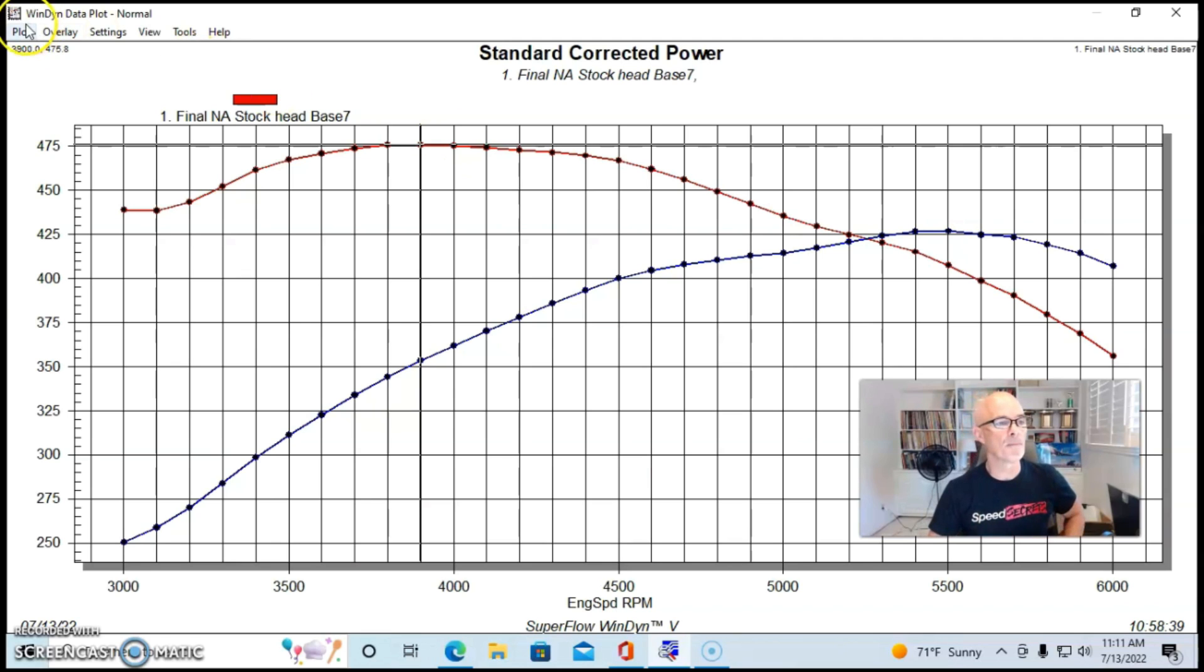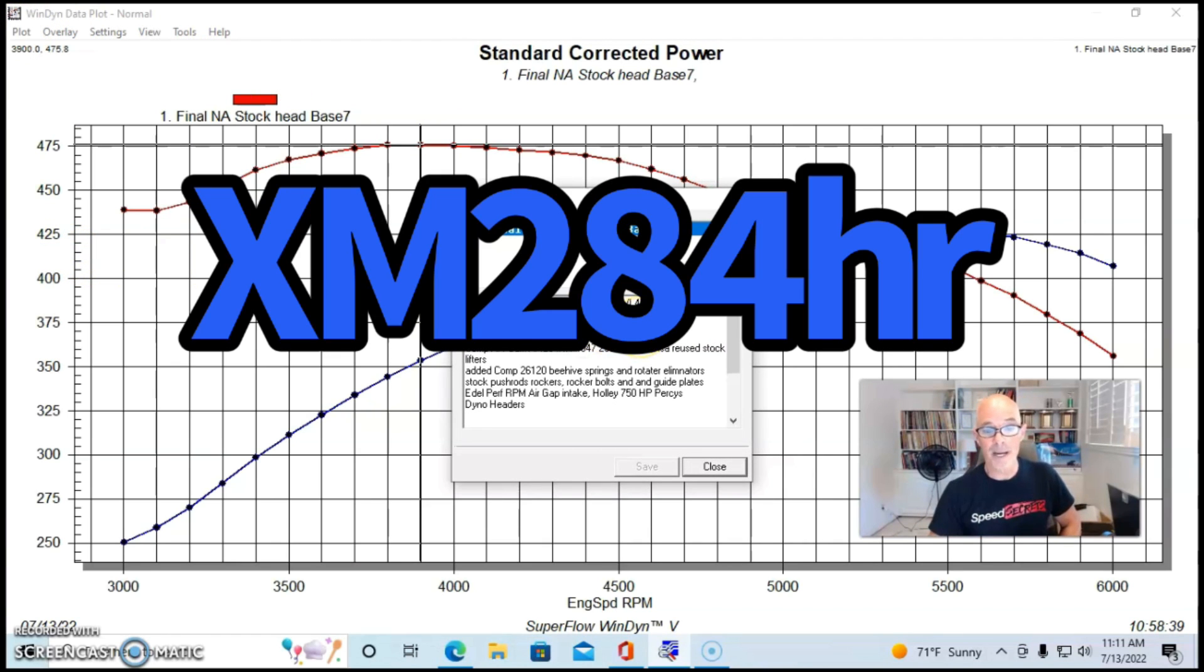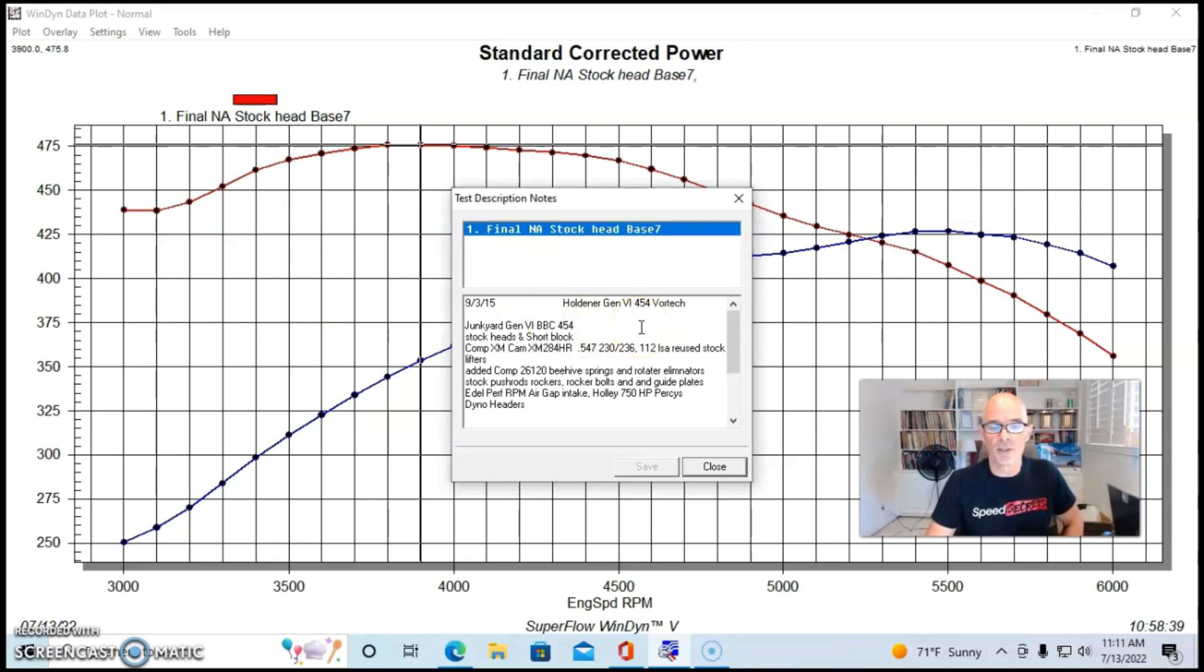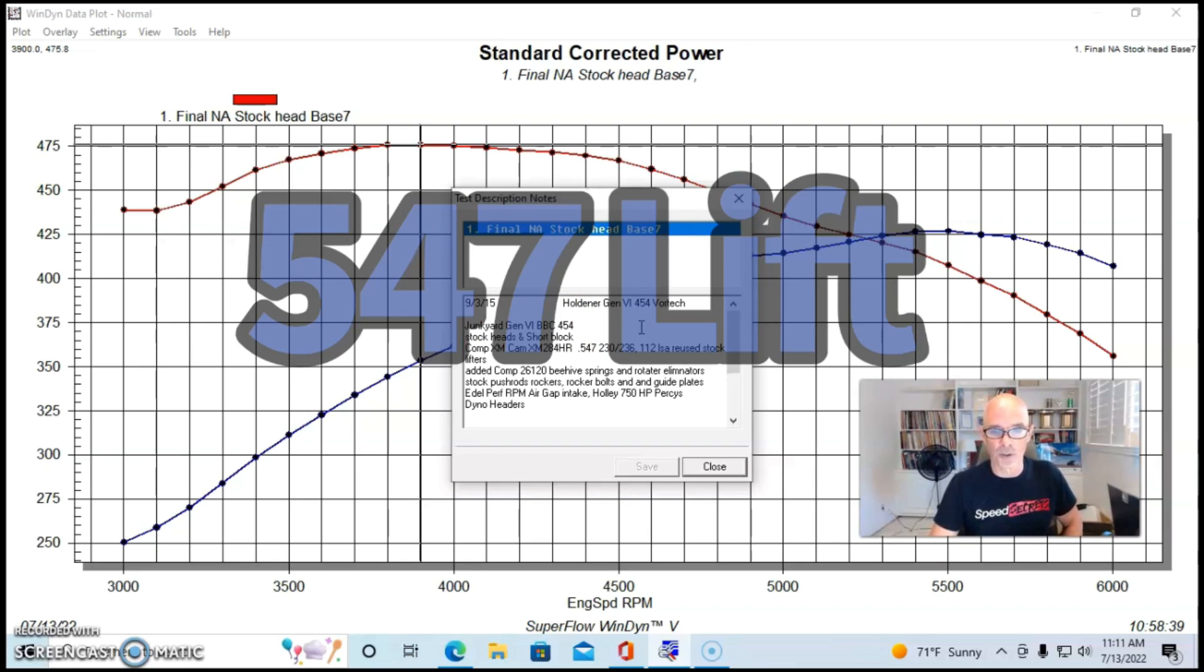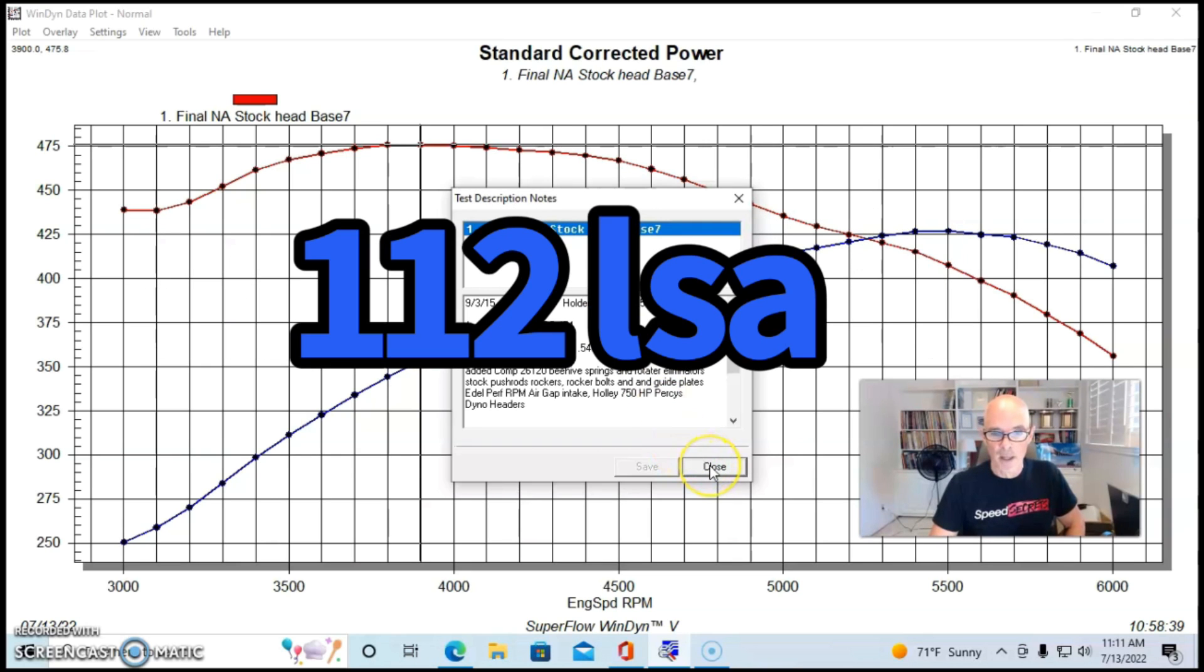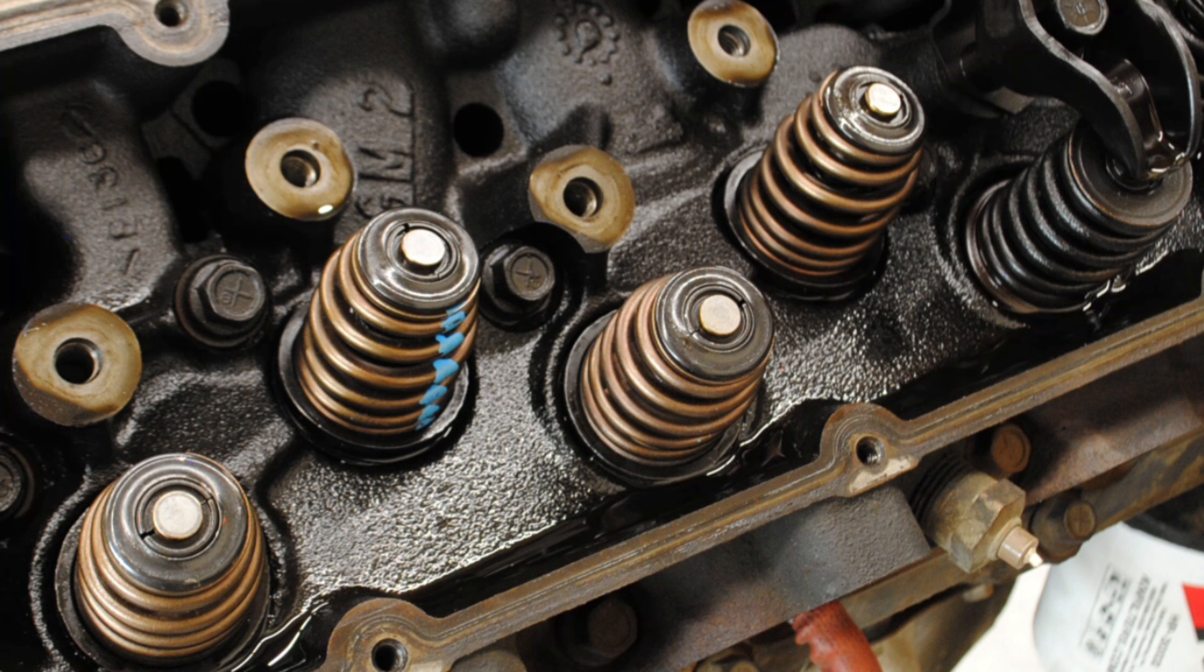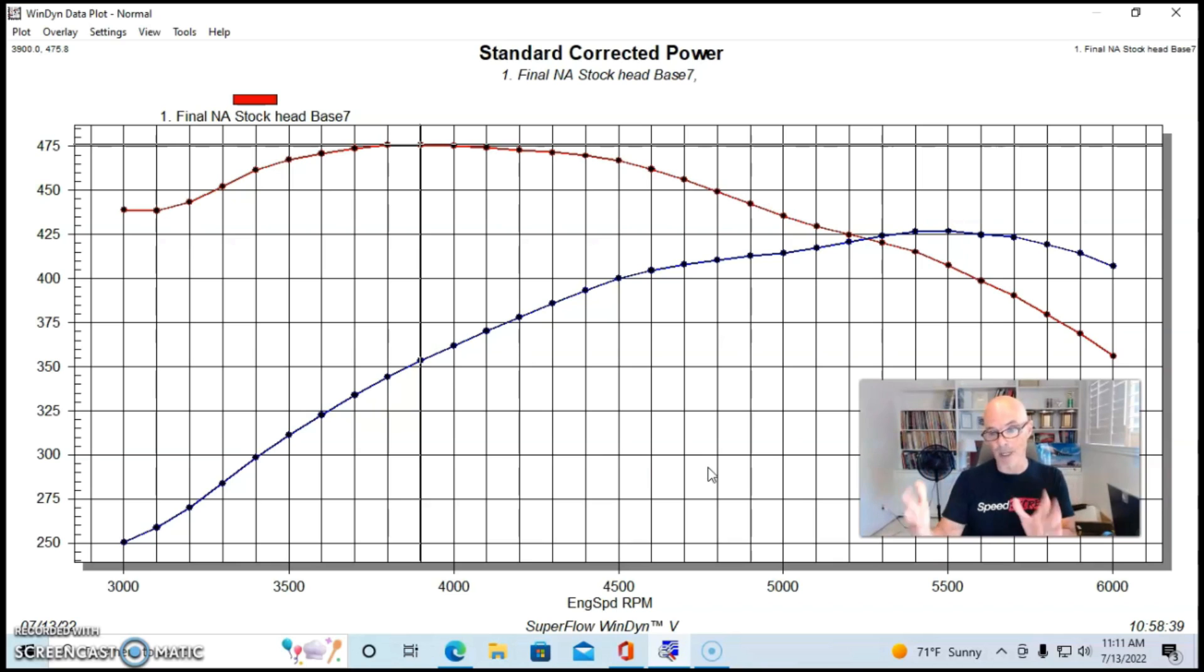We put a small camshaft in this - an Extreme Marine 284. It was 547 lift, a 230-236 degree duration split, 112 degree lobe separation angle. That's about as big as will fit with available piston to valve clearance. Make sure to measure that. And springs are very important on this because of the way that they have set up this cylinder head. You might have to modify the spring pockets or the combination to get the right spring package in this combination.